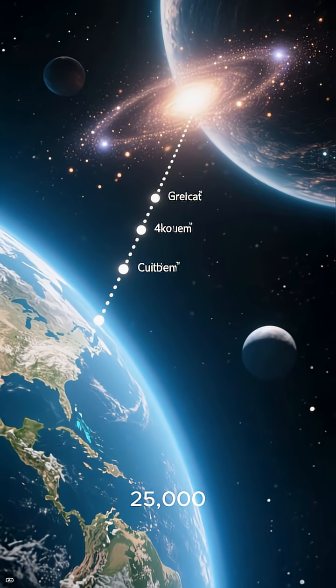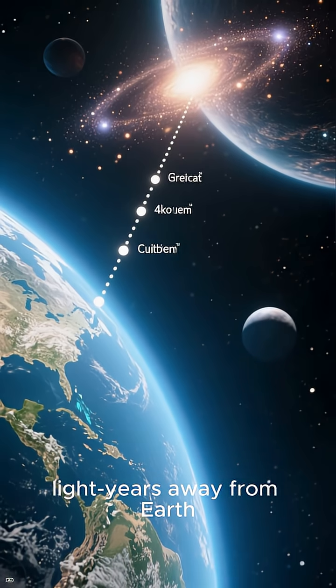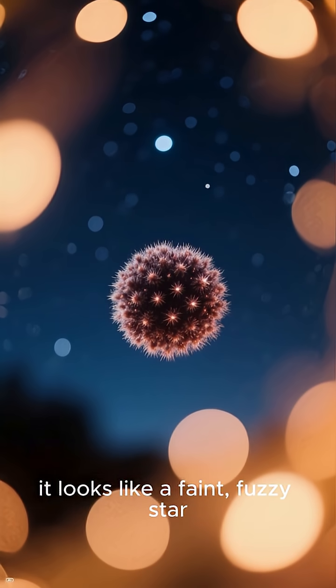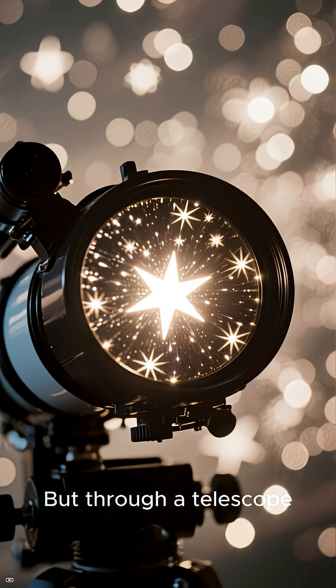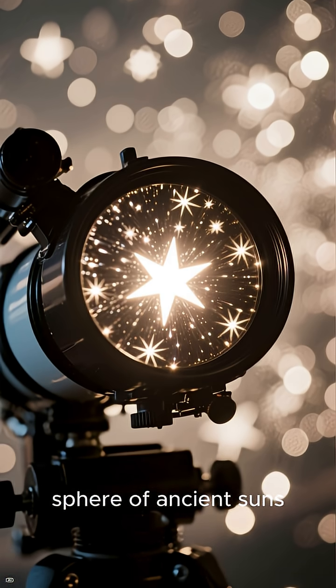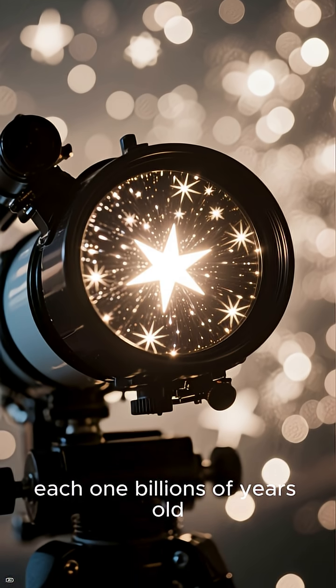M13 is located about 25,000 light-years away from Earth. To the naked eye, it looks like a faint, fuzzy star. But through a telescope, it bursts into a dazzling sphere of ancient suns, each one billions of years old.